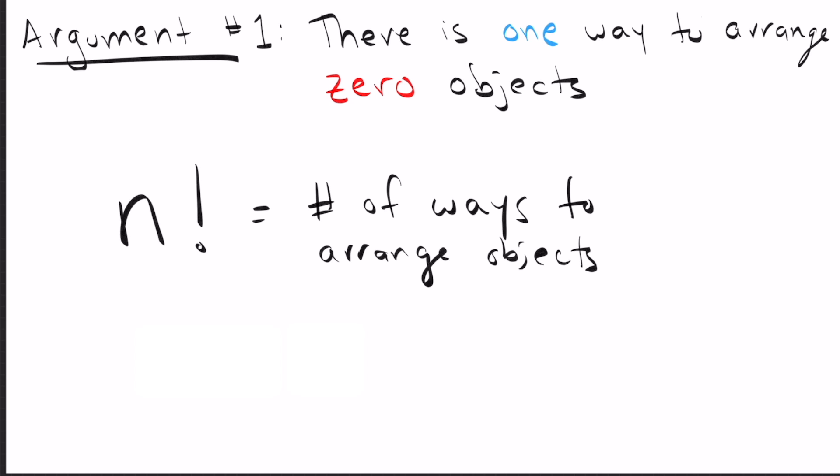So the argument goes, well, if I have 0 objects, how many ways can I arrange them? Well, I can arrange them one way, and so therefore 0 factorial equals 1. But this is not a convincing argument. I mean, why are we saying that there's only one way to arrange 0 objects? Why don't we say that there are no ways to arrange 0 objects?